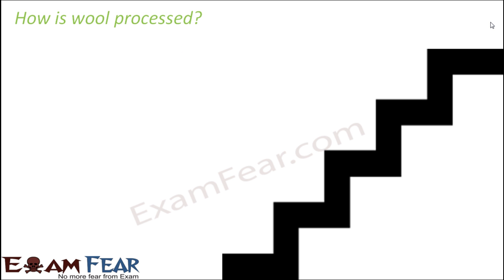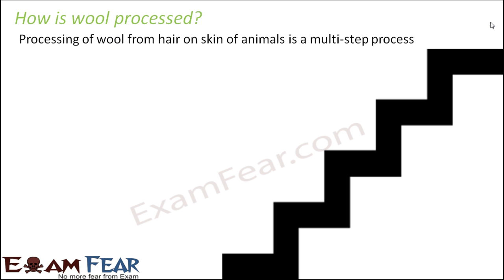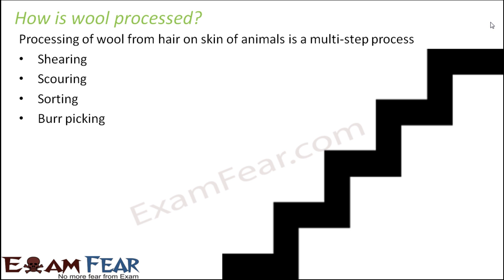Now let us look at the entire process by which wool is processed. We know which animals give us wool and how to care for them. Processing of wool is actually a multi-step process — it starts from obtaining fleece from the skin of animals, but we cannot directly use it for making sweaters. A lot of steps are needed before we receive wool yarns in shops.